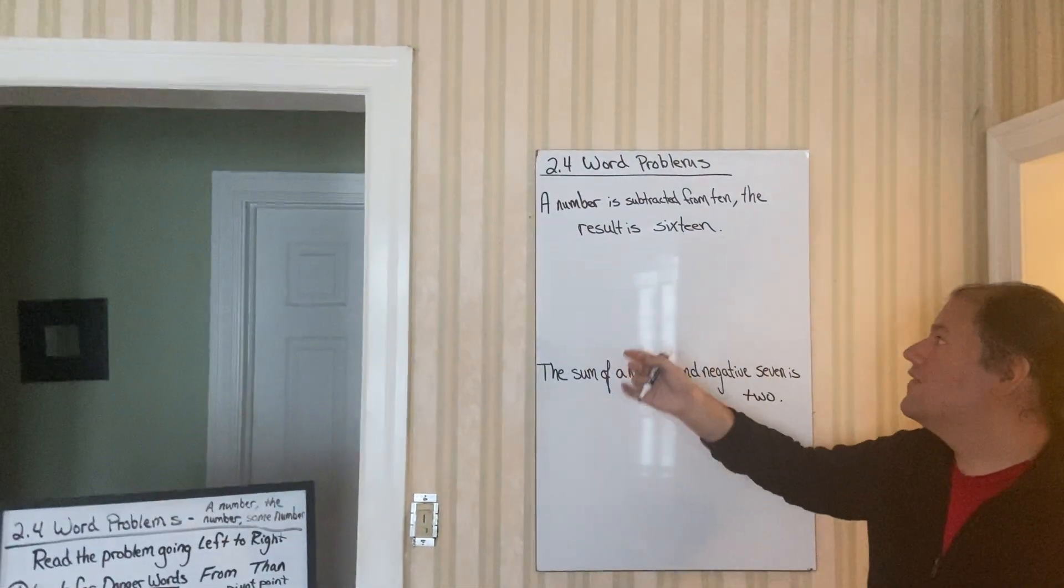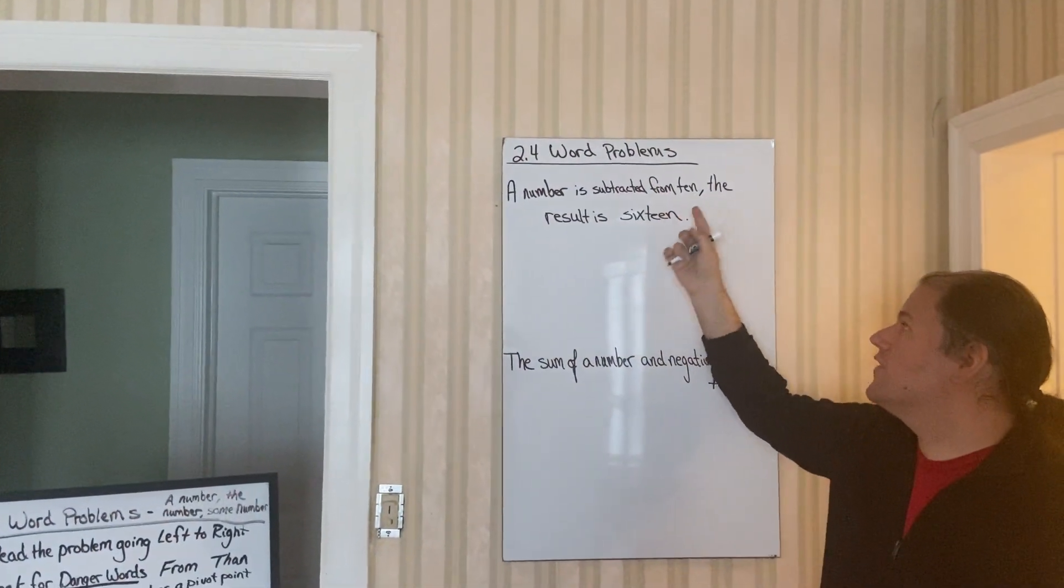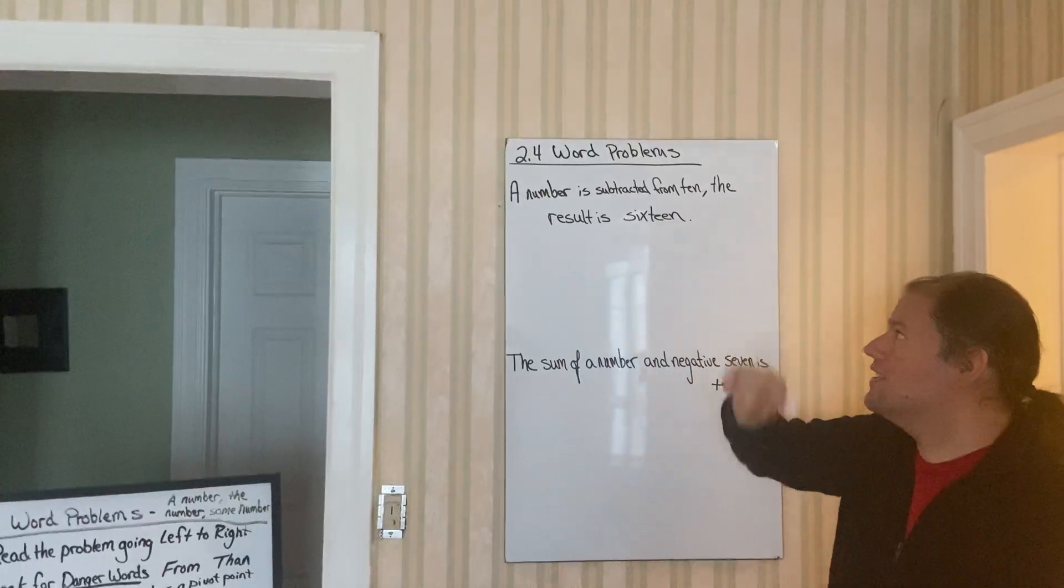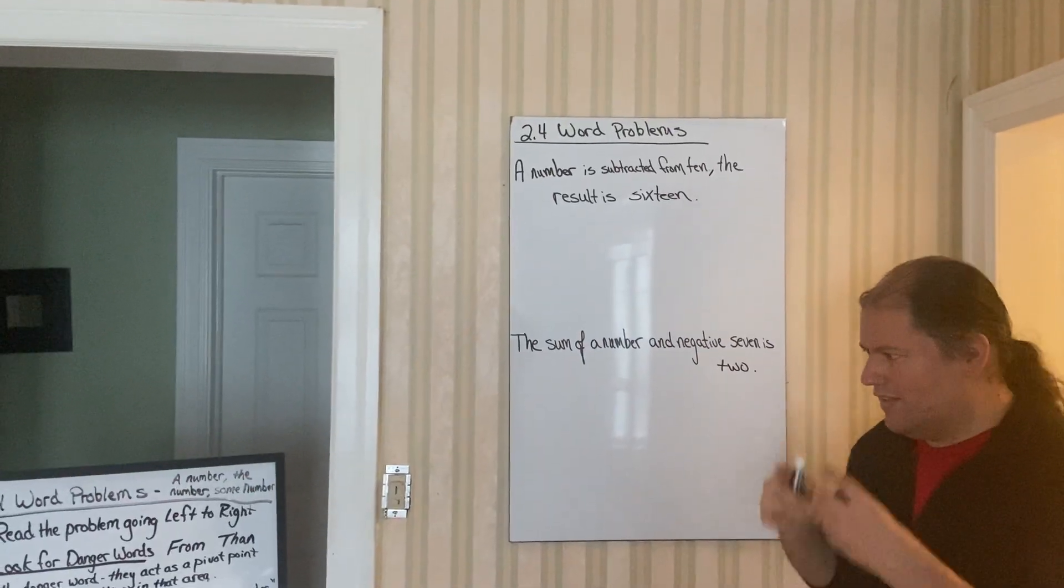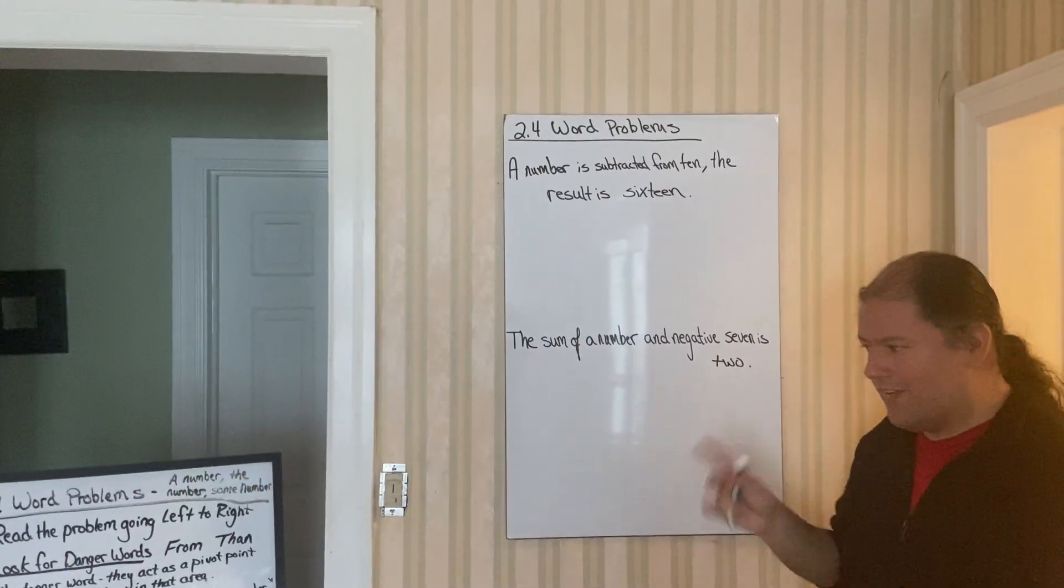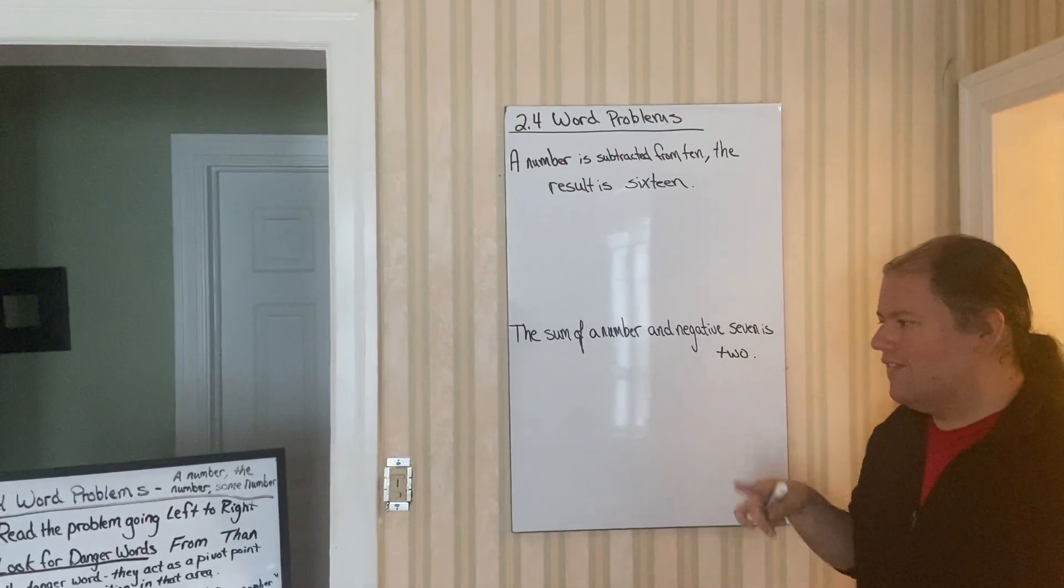All right, so here we have a number is subtracted from 10. The result is 16. So again, let's go through our steps. We already read it once. We read it from left to right.